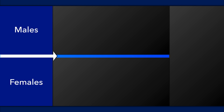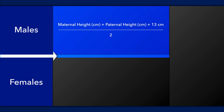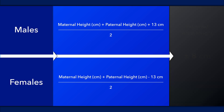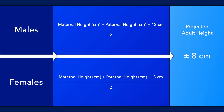The mid-parental height is a calculation based on parental stature that provides a crude estimate of a child's adult height. In males, add 13 centimeters to the sum of the parents' height and then divide by two. While in females, subtract 13 centimeters from the sum of the parents' height and then divide by two. The estimated adult height of the child is typically within a range of 8 centimeters above or below this value.